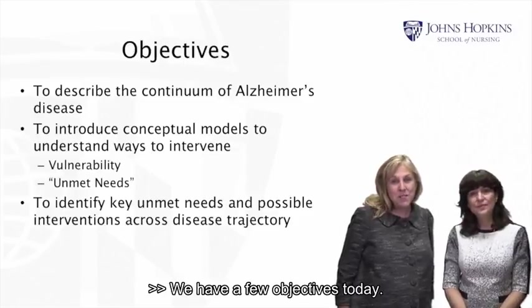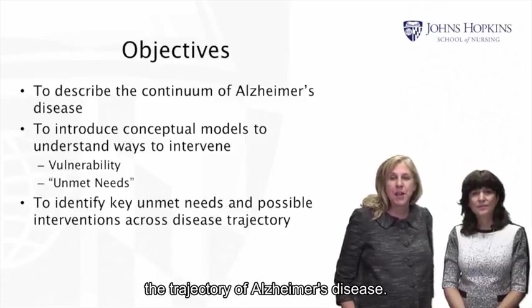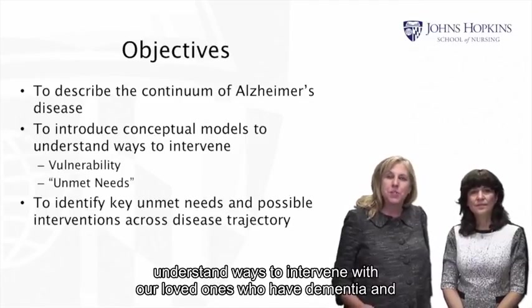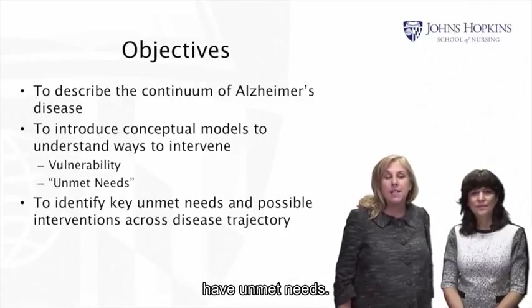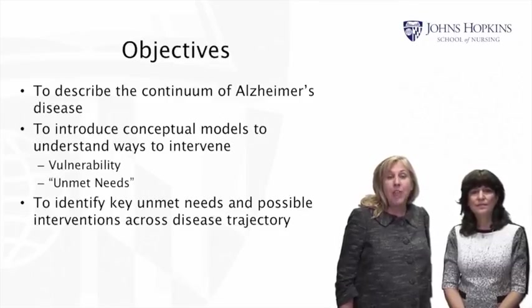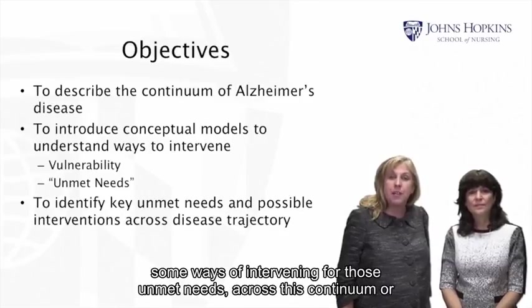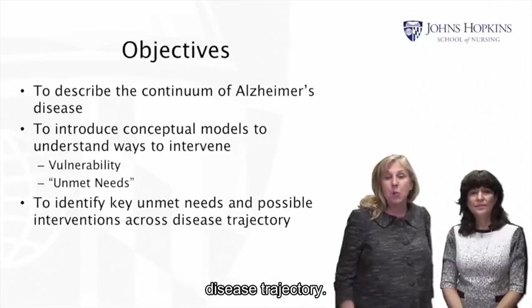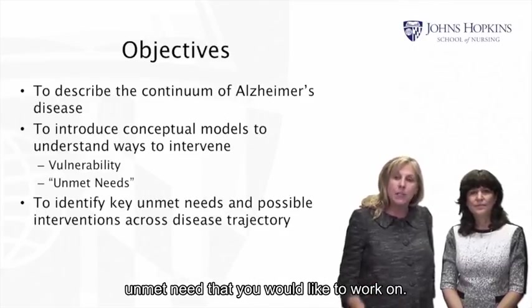We have a few objectives today. The first is to describe what we mean by the continuum or the trajectory of Alzheimer's disease. We're going to introduce several conceptual models — the vulnerability model and the unmet needs model — that will help us understand ways to intervene with loved ones who have dementia and have unmet needs. Third, we're going to help you identify some key unmet needs and ways of intervening across this continuum, and it will help you complete this week's assignment, which is to identify an unmet need you would like to work on.